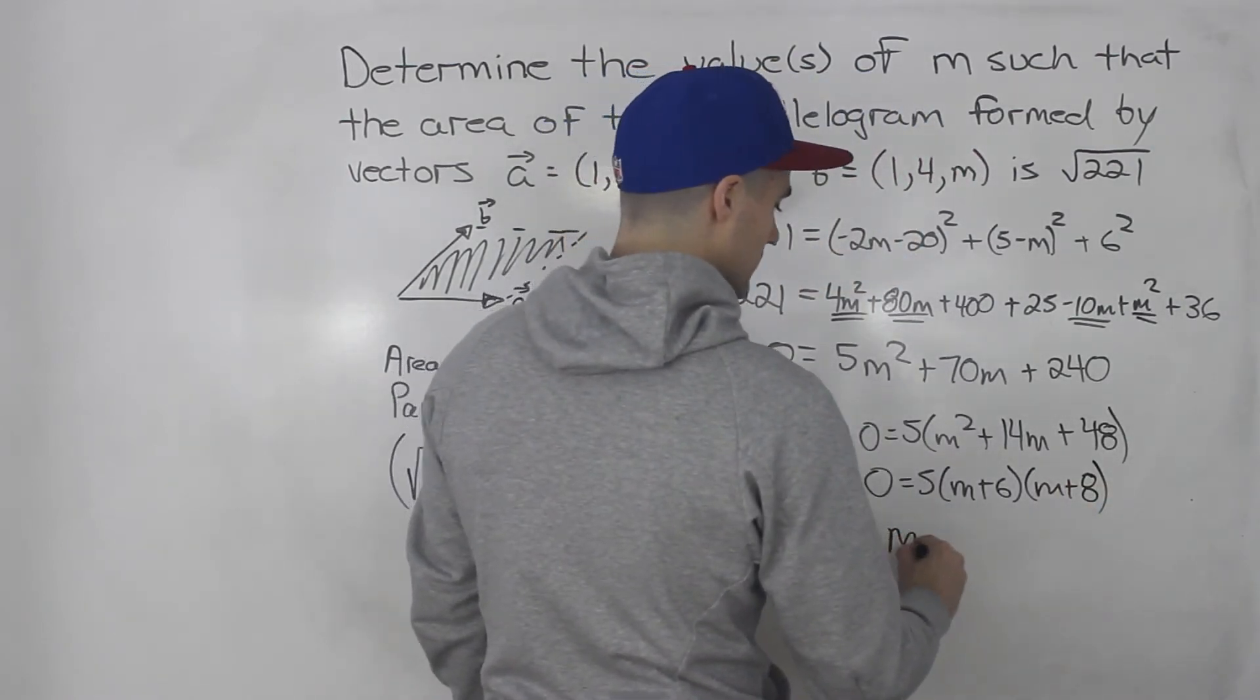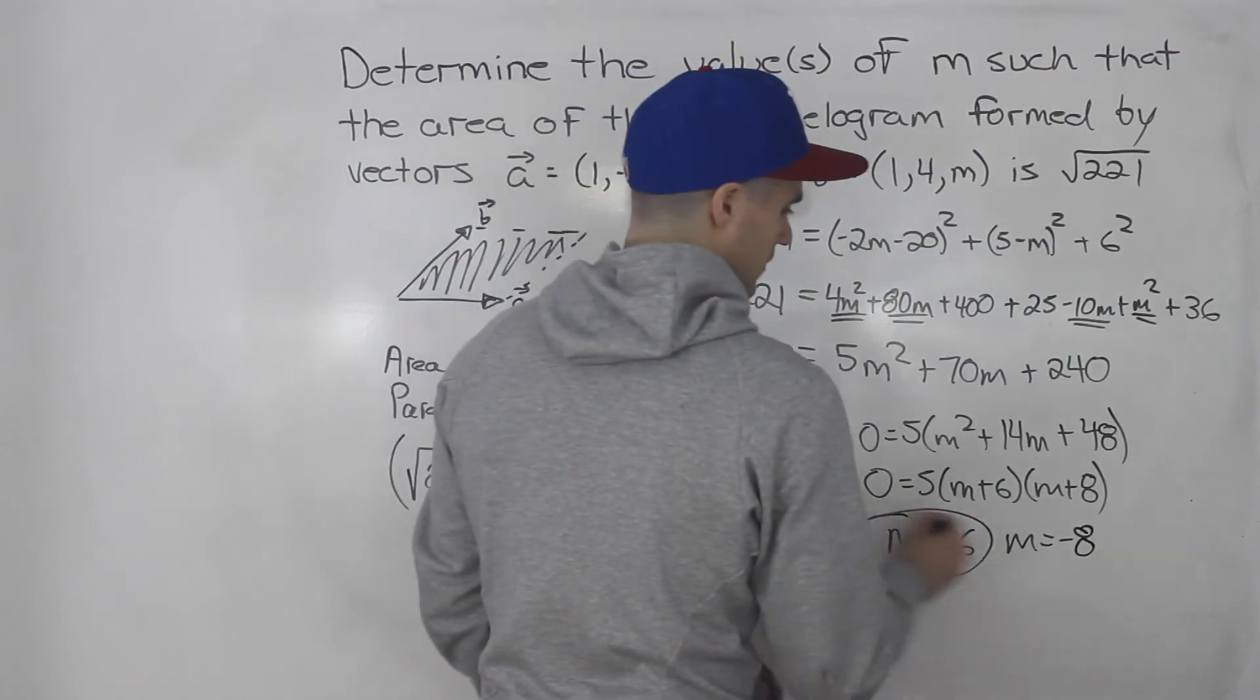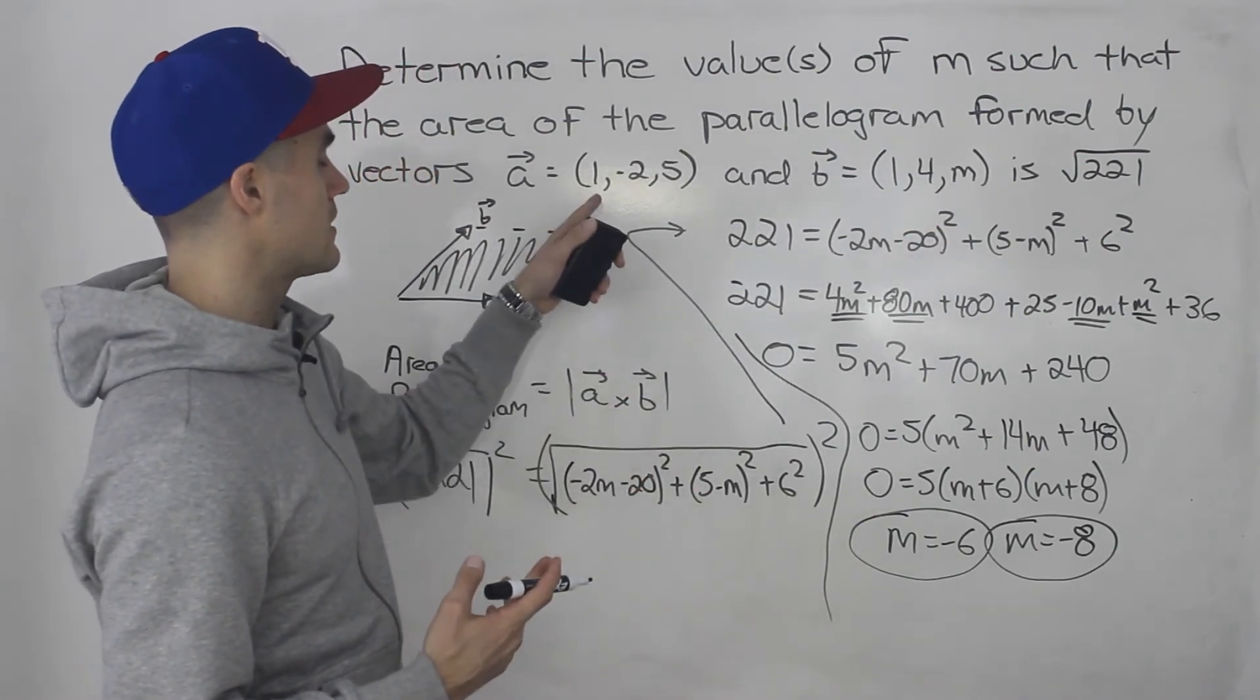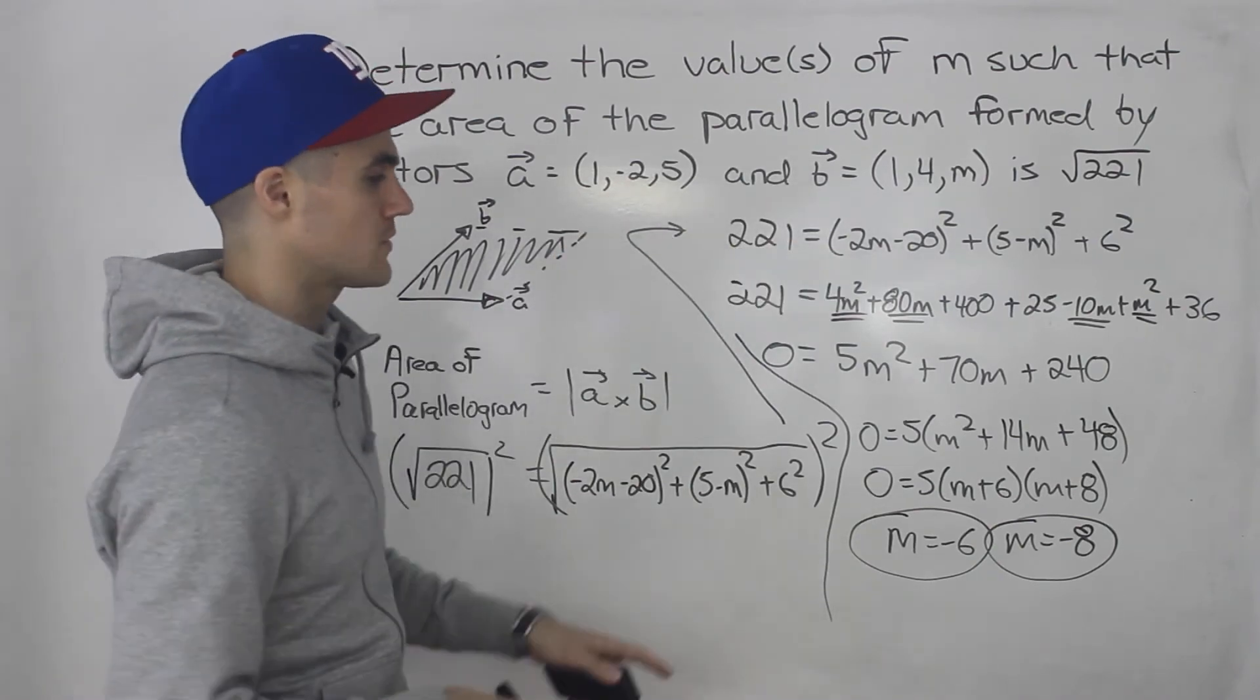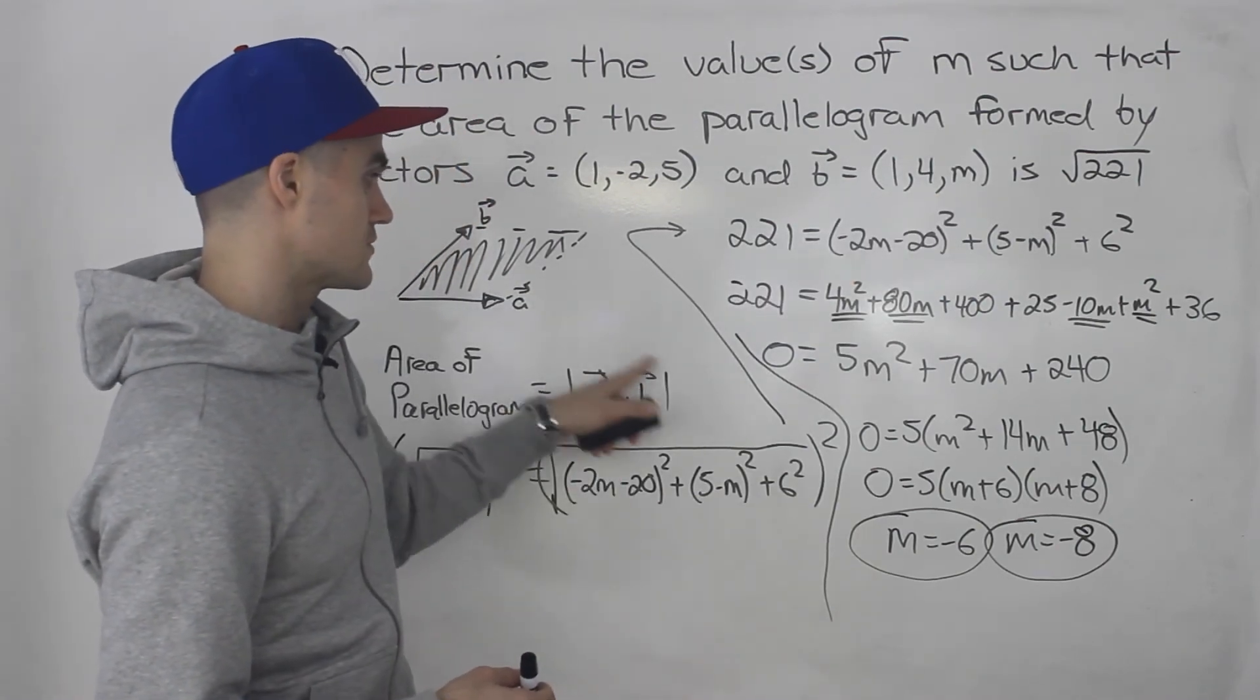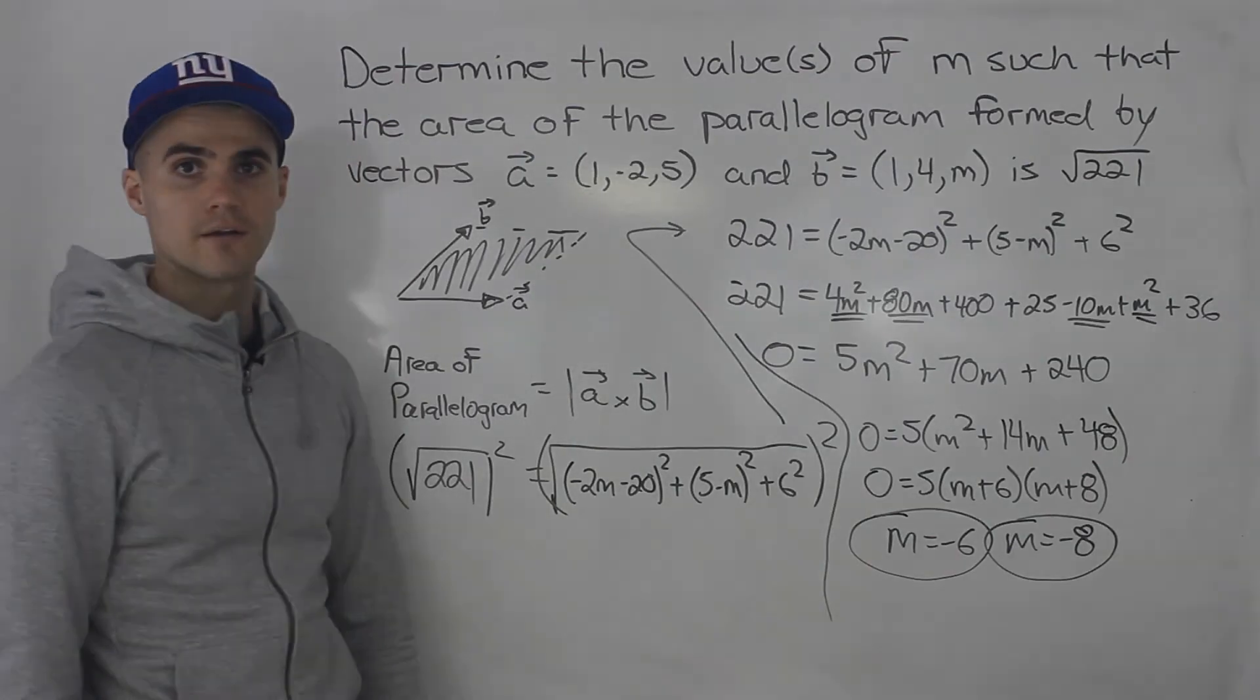So what are the m values? Negative 6, negative 8, those are your final answers to this question. If m is either negative 6 or negative 8, then the area of the parallelogram formed by these two vectors is going to be root 221. You can actually check your answer, so you could plug in negative 6 here, find that magnitude of the cross product, and you will get root 221, same thing with negative 8. So those two are your final answers.